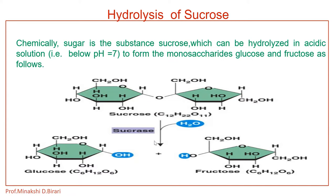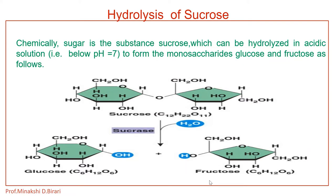Chemically, sugar is the substance which can be hydrolyzed in acidic solution to form two monosaccharides — glucose and fructose. We should remember the structure of sucrose. Glucose and fructose both have the same molecular formula C₆H₁₂O₆ but differ in their structures. Glucose has a 6-membered ring and fructose has a 5-membered ring.